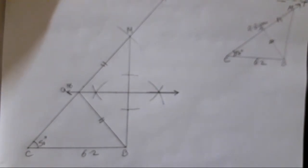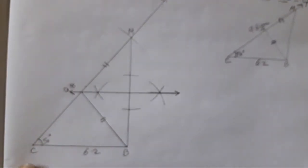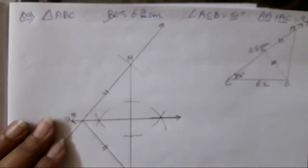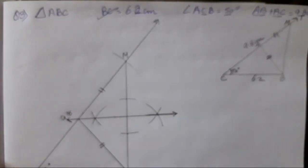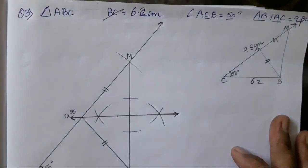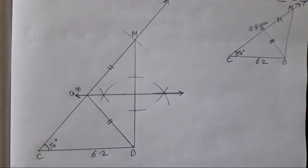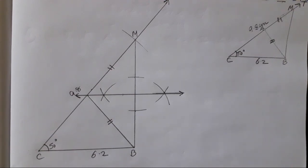Question number four and question number five are the same type, so you all have to try them on your own. There is nothing much to do — same kind of figures. Take the steps that I have shown during this video. Same steps you have to do for question number four and five. I hope you all have understood how to construct a triangle with the given measurements. If there are any queries, please let me know in the comment section. The algebra playlist is ready on the channel — you can go and watch for revision of chapter one to chapter four. See you in the next video. Take care. Bye.